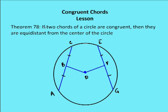Moving on to the next theorem: if two chords of a circle are congruent, then they are equidistant from the center of the circle. What I want to prove here is that BD is congruent to DF. I'm given that two chords of this circle are congruent, so CA and EG are congruent.